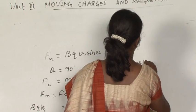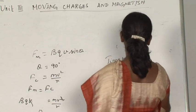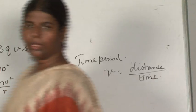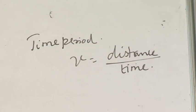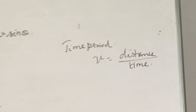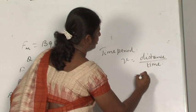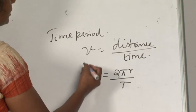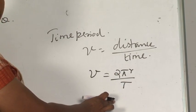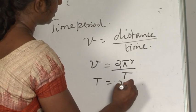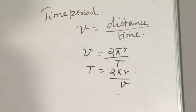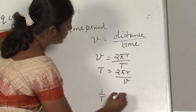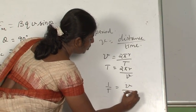What is the time period? Velocity equals distance travelled by time taken. If the charge moves in a circular path, it completes one circumference 2πR. Let T be the time period to complete one full circle. So V equals 2πR by T, which gives T equals 2πR by V. And frequency, 1 by T, equals V by 2πR.